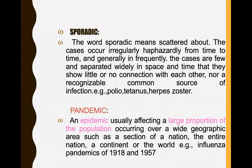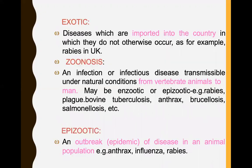Pandemic: an epidemic usually affecting a large population, occurring over a wide geographic area such as a section of a nation, the entire nation, a continent, or the world. Examples include influenza pandemic and COVID-19. Exotic: diseases which are imported into a country in which they do not otherwise occur — for example, rabies in the UK.